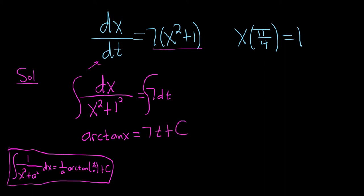OK. Let's go ahead and use our initial condition, which is this. This means that when x is 1, t is pi over 4. Let's go ahead and plug these values into this equation and find our value of C.